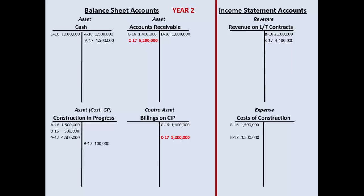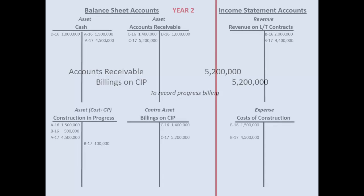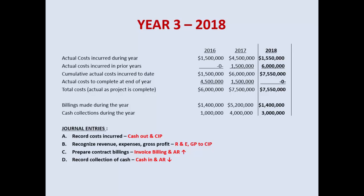Then send out the bill and receive payment of $4 million for year two. Year three: construction is done. Costs went up a little more but there's still a profit — just not the $2 million originally hoped for.